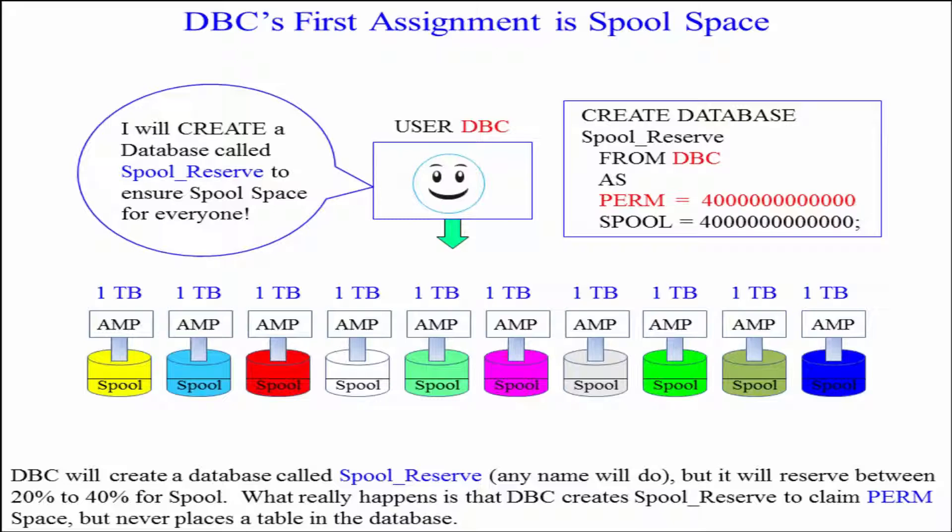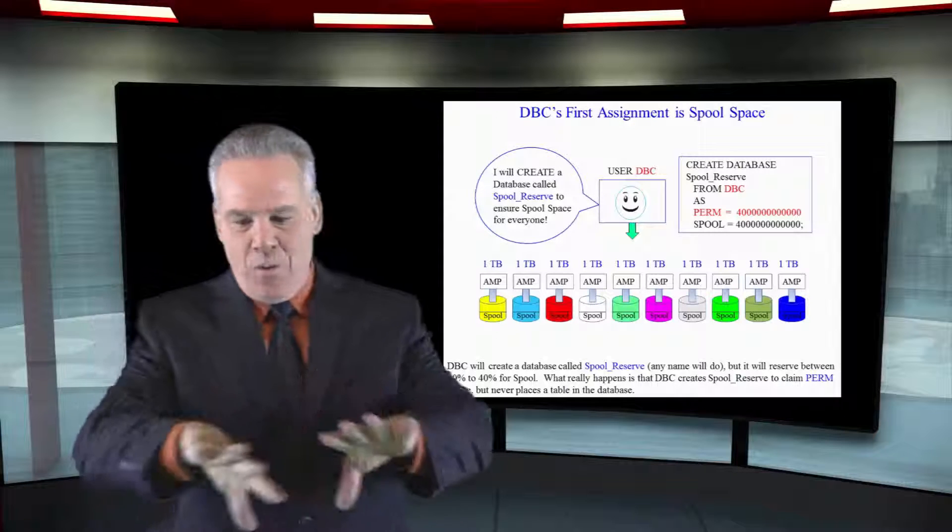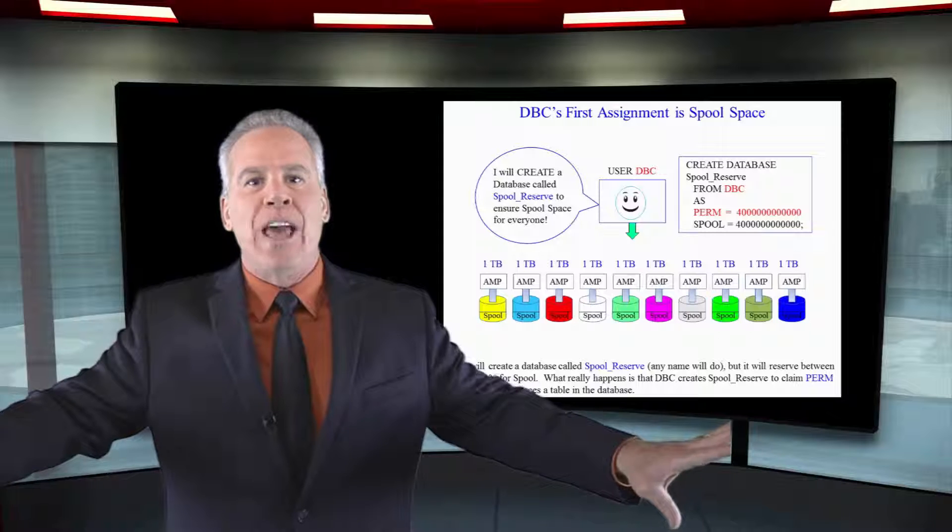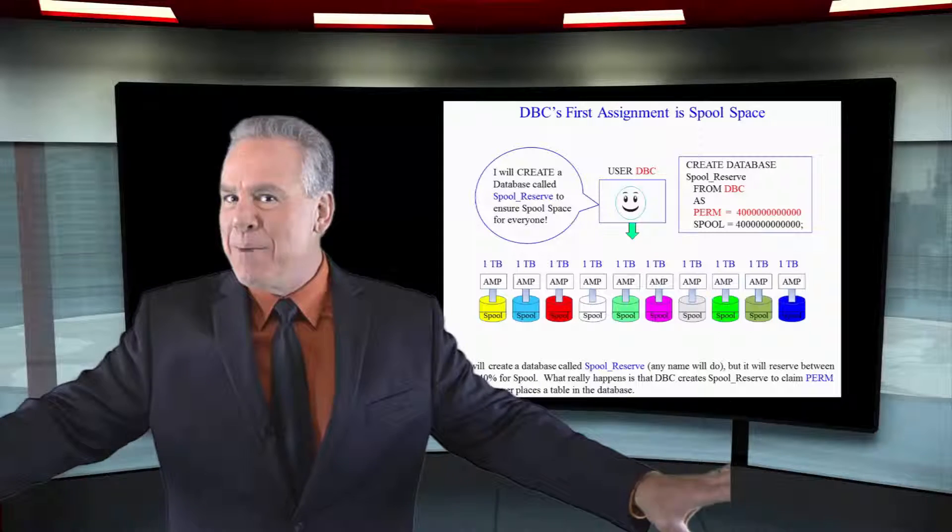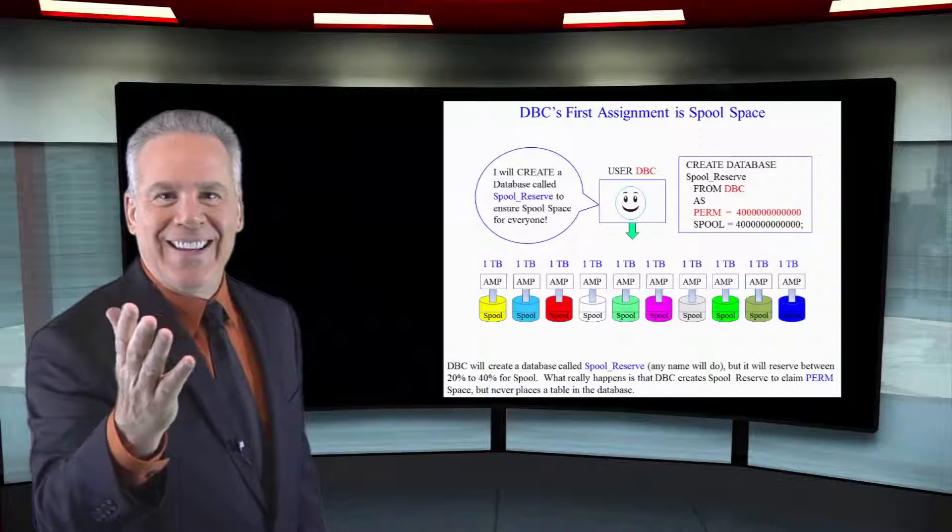They told me we're not going to put any tables in that database. That way there will always be empty space out there. And that's how spool space is created at a system level. We've just guaranteed on a 10 terabyte system that 40% of this system would have empty space because we created that database with perm space, but never put anything in it.